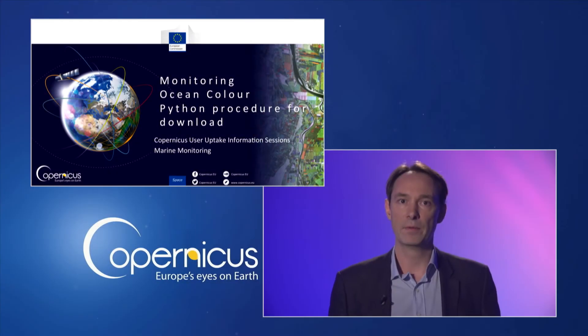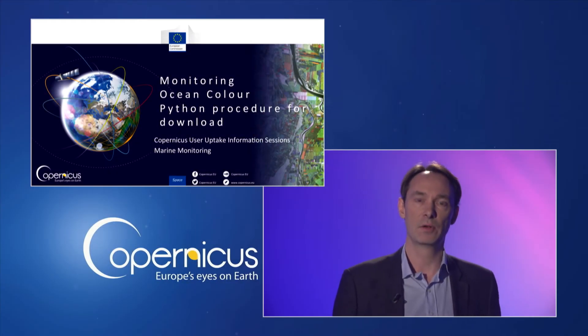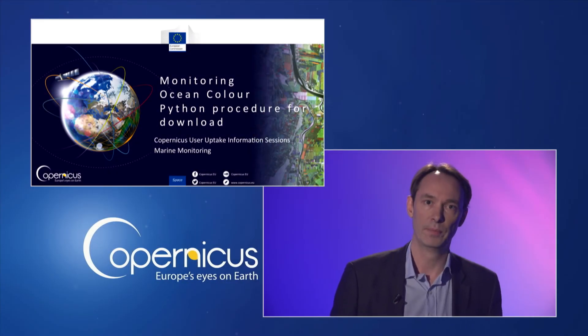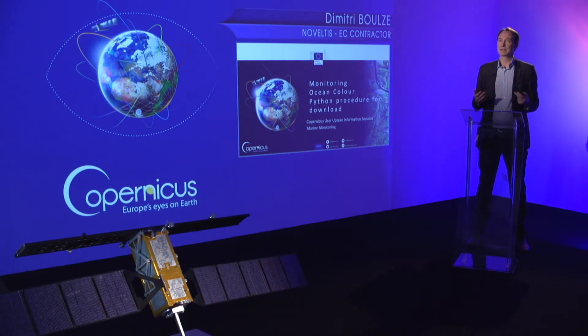These sub-modules showcase the ability of CMEMS products to provide ocean colour information to derive indicators of algae bloom. It is dedicated to the access of products such as mass concentration of chlorophyll in seawater, and optical property measurements giving information about transparency, organic materials and suspended matter in seawater.